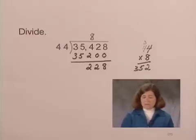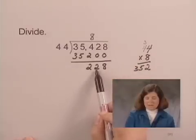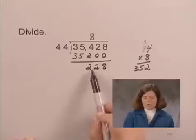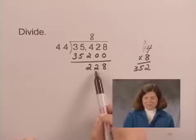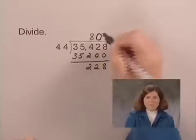Now the next part can be tricky. We're working on the tens digit, so coming down to the tens digit, we need to ask ourselves, can we divide 22 by 44? Well, there are 0 44's in 22, and we need to write the 0 in this place as a placeholder.